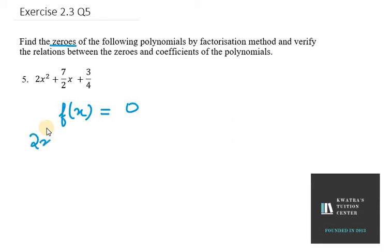We will equate this polynomial to 0 first. So 2x squared plus 7 over 2x plus 3 over 4 equals 0. Now, on the left hand side, we need to take LCM and LCM will be 4. LCM of 2 and 4 is 4.